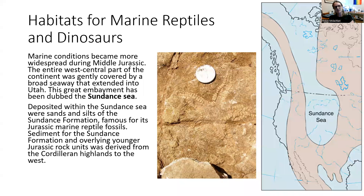We've talked about the East Coast and the West Coast. Let's come back to the center of our continent. We've talked about the epicontinental seas that occurred during the Mesozoic Era, and I want to focus on one specific epicontinental sea that formed the Sundance Sea.